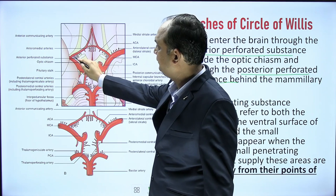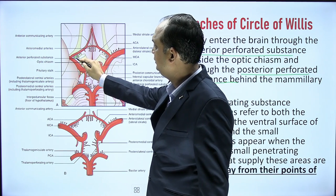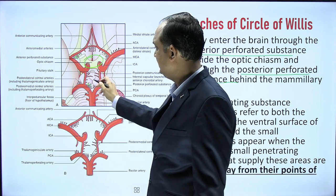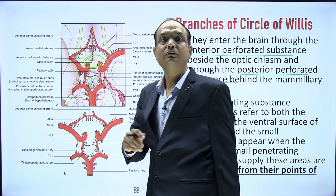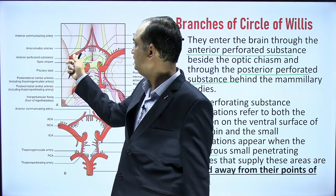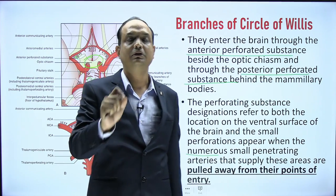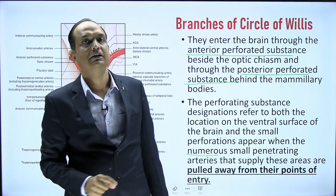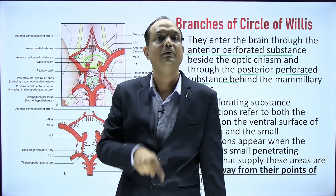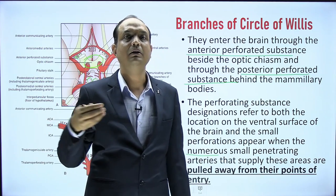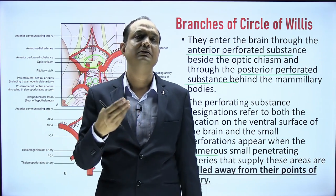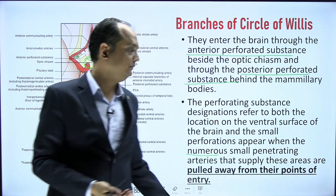You will find multiple perforations near the optic chiasma — the anterior perforating substance — and near the mammillary body — the posterior perforating substance. In spotting examinations, you may be asked to identify these areas and their function. These perforating substances allow multiple arteries to enter the brain to supply deeply placed areas, and they represent the entry zones for the central branches of the Circle of Willis.